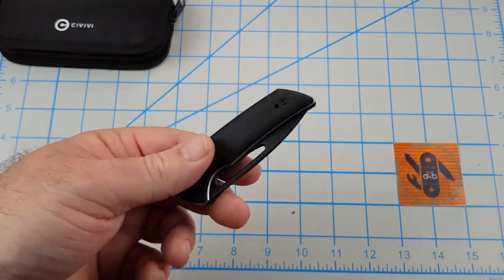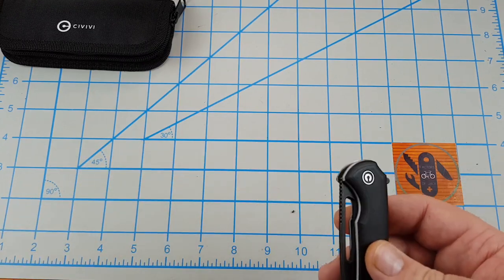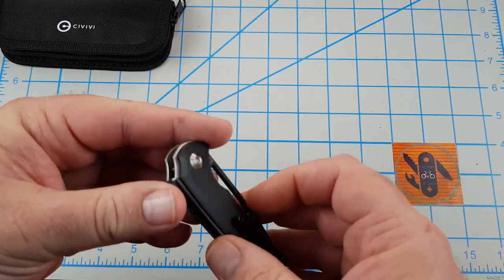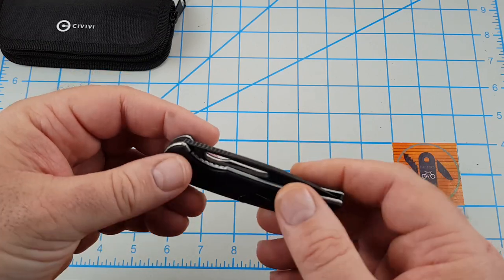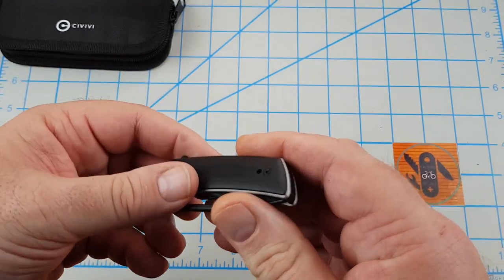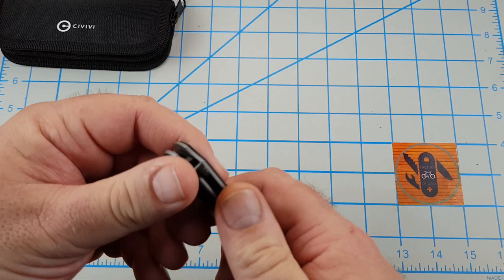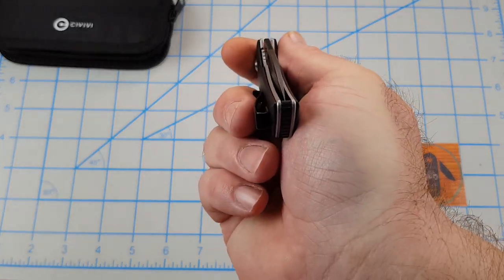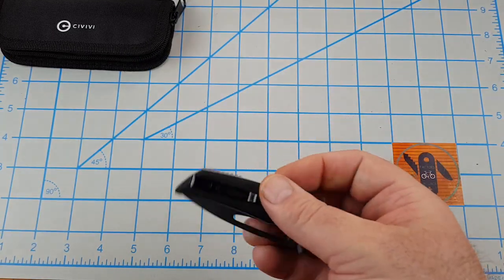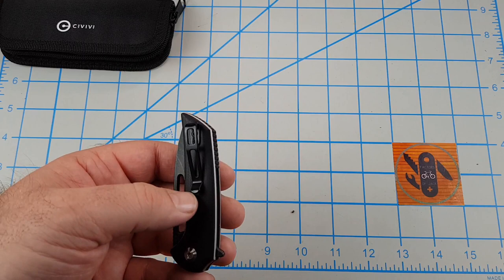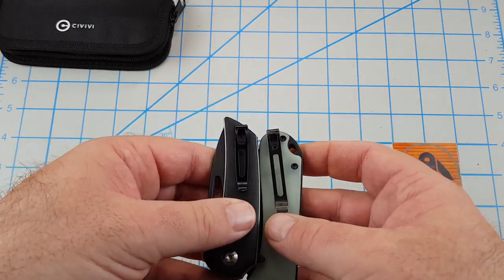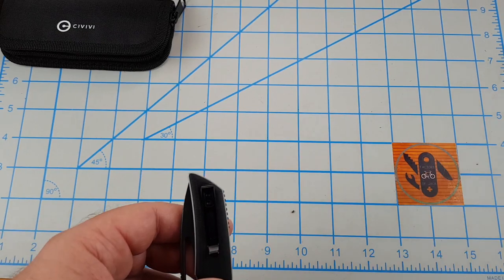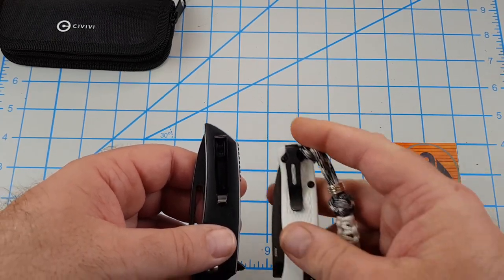Overall fit and finish, it's what you expect from Civivi and Ferrum Forge, but this seems exceptionally well done. I haven't had a Civivi that I complained about fit and finish, and this is no exception. Blade centering, it's dead on. Pocket clip is the regular Civivi pocket clip but it's shorter. You can see compared, these two are quite a bit smaller. Definitely smaller than the Banter.